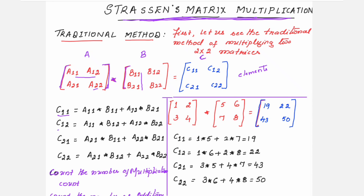Similarly, C12 is computed by taking the elements of the first row of the first matrix with the elements of the second column of the second matrix. C21 is computed by multiplying the elements of the second row of the first matrix with the elements of the first column of the second matrix. Then C22 is obtained by multiplying the elements of the second row of the first matrix with the elements of the second column of the second matrix.